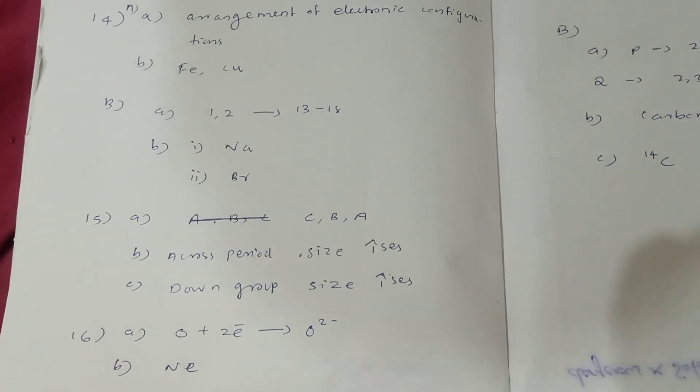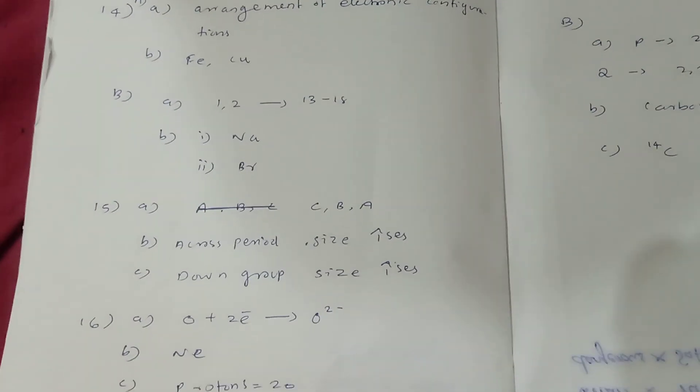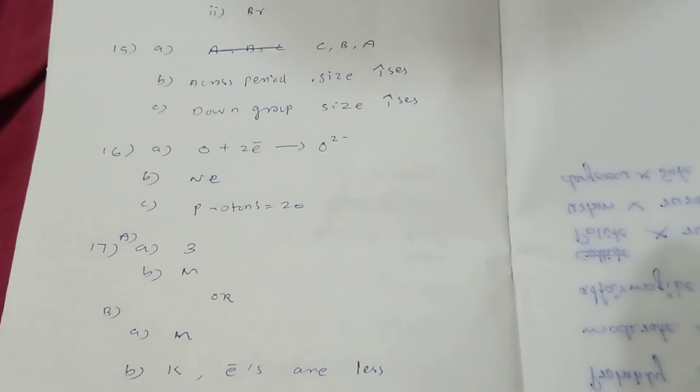Question number 14: A — 1, 2, 2; B — 13 to 18. B — 1, N, A; B — 2, B, R.